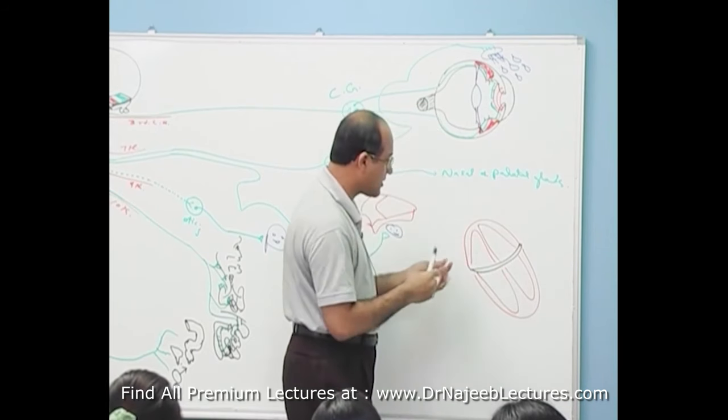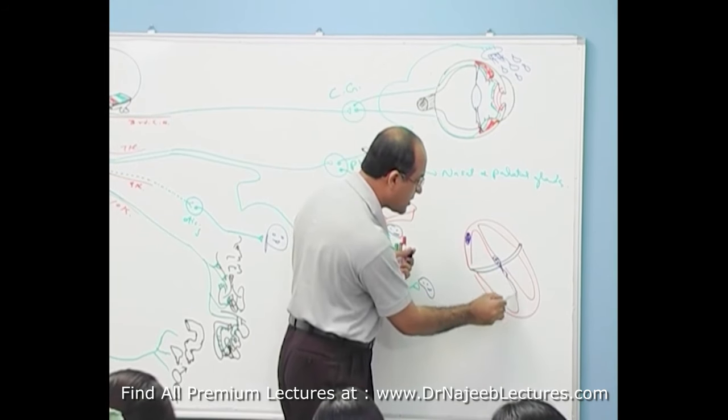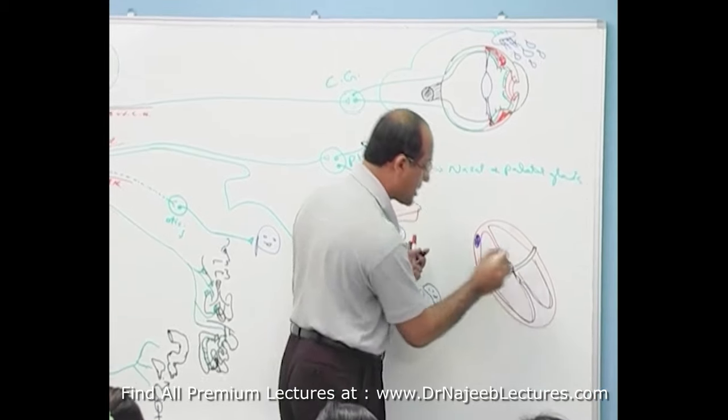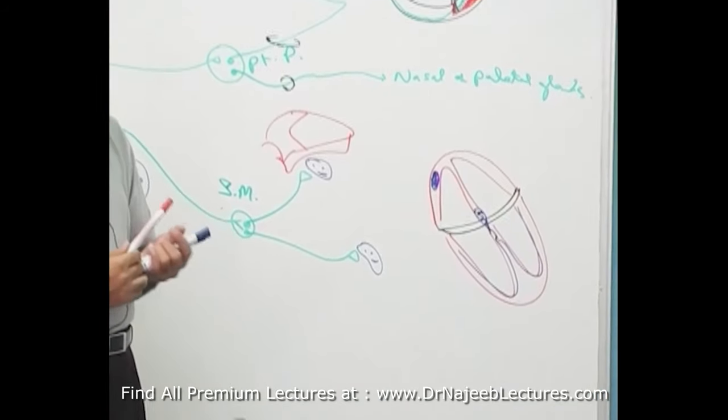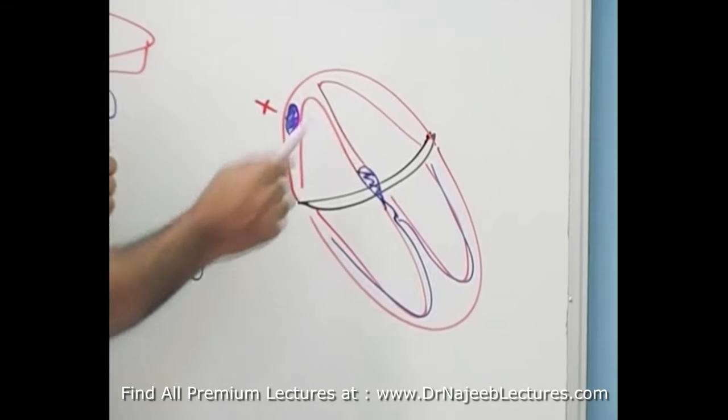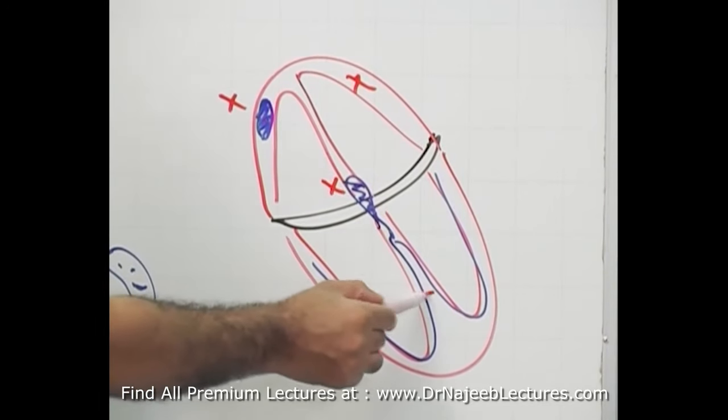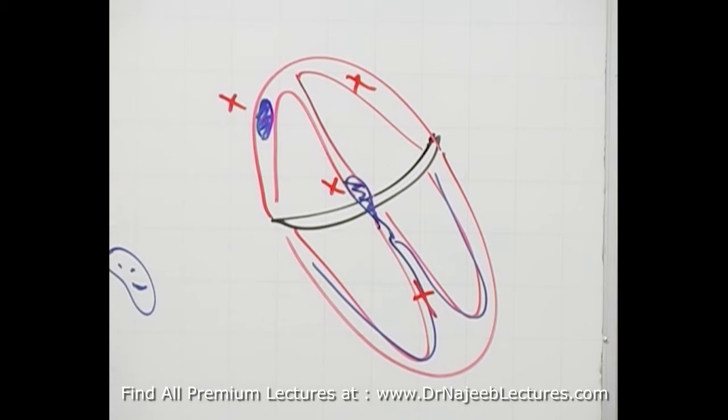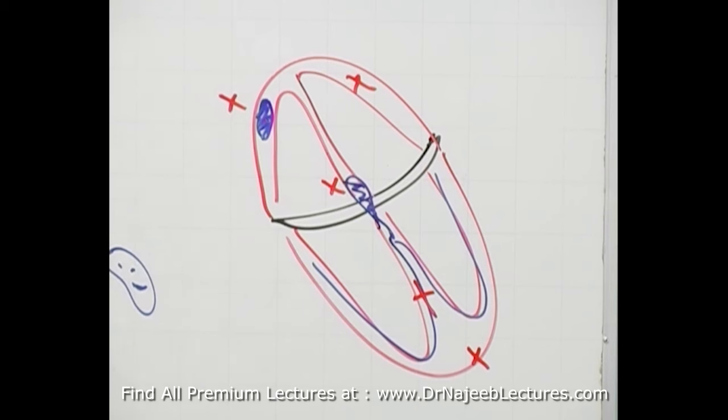In the heart, there is SA node, AV node and Purkinje fibers. Sympathetic supply goes to SA node, it goes to atrium. Sympathetic receptors are also present on AV node, on Purkinje fibers, and sympathetic fibers are also present on generalized ventricular myocardium.